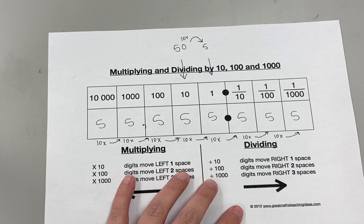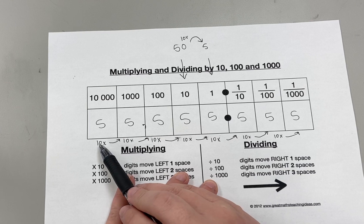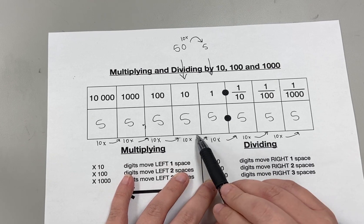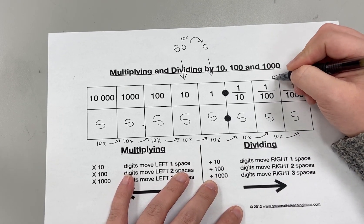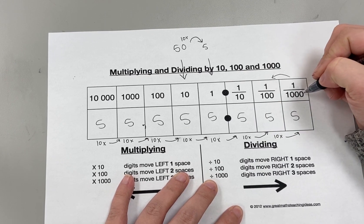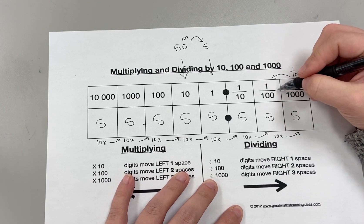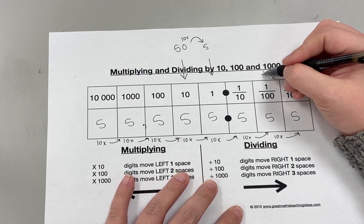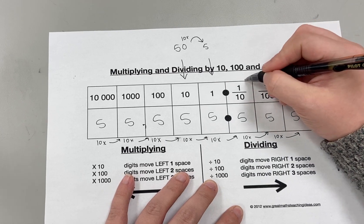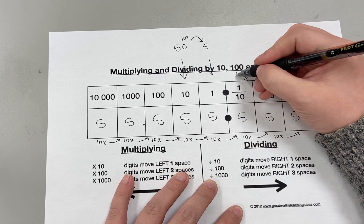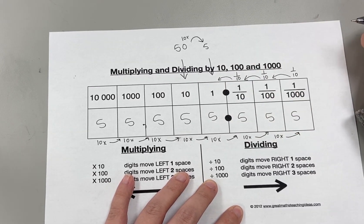Now let's say that I asked you to go the other way. Going to the right, a digit is ten times bigger than a digit to its right. But what if we were going left? That would mean that the five in the thousandths place is one-tenth of the five in the hundredths place. And the five in the hundredths place is one-tenth of the five in the tenths place. And the five in the tenths place is one-tenth smaller than the five in the ones place.